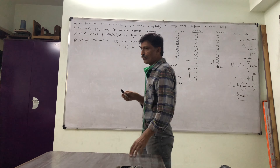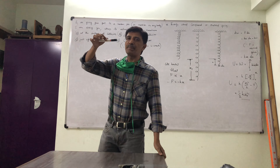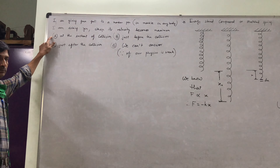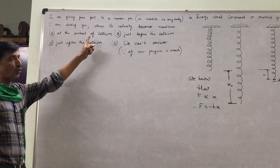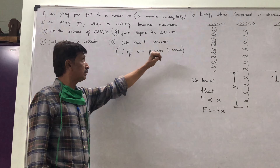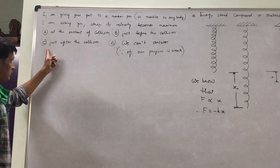Today we are discussing an important question. Suppose I am giving a free fall to a body from a certain height. When does the velocity of the falling body become maximum? At which point is it the maximum?